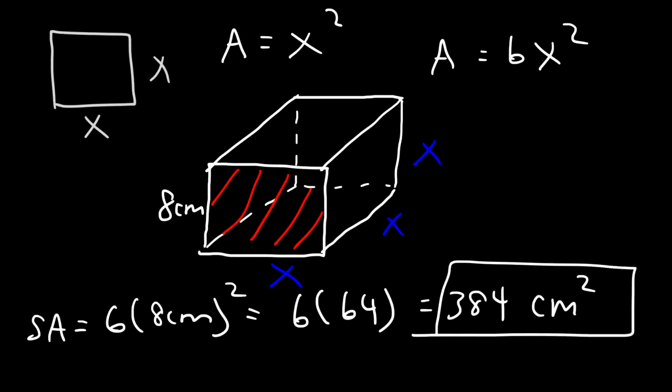So that's how you can calculate the surface area of a cube. It's 6x squared where x is the side length of the cube.